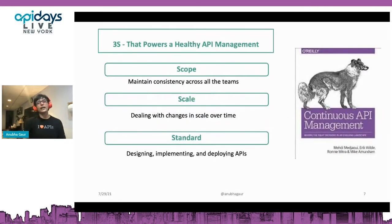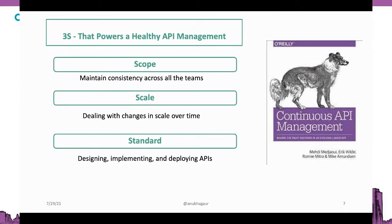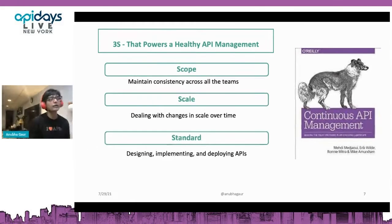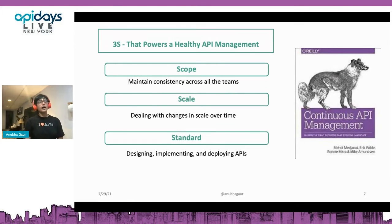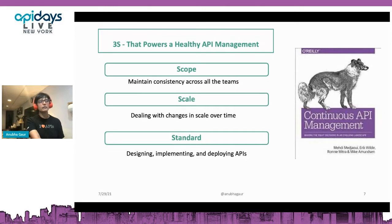I want to share the model we applied, from a great book I recommend everyone read: 'Continuous API Management.' This book touches on different aspects of APIs, but today I will cover the Three S — the basic elements of a healthy and growing API management program. The first one is scope — the proper level of control — and this is the biggest challenge.